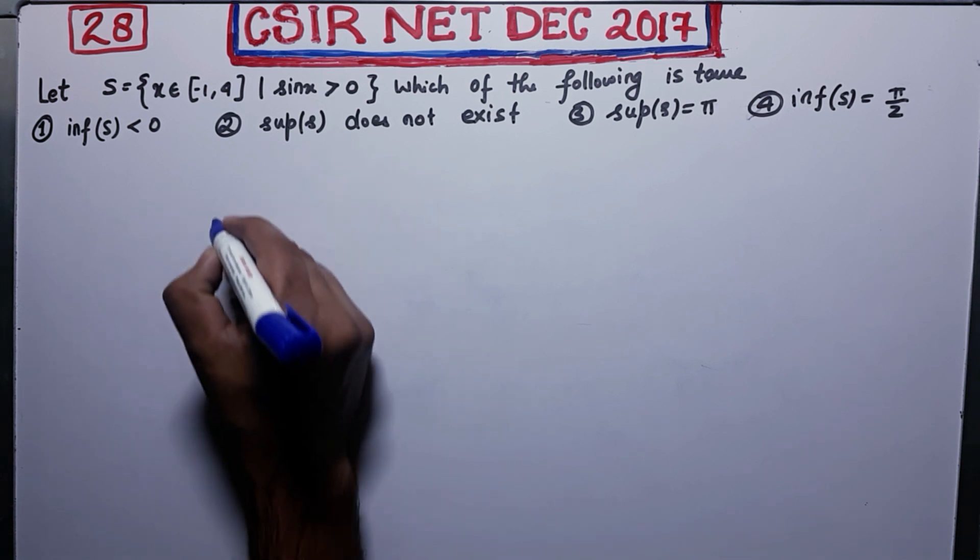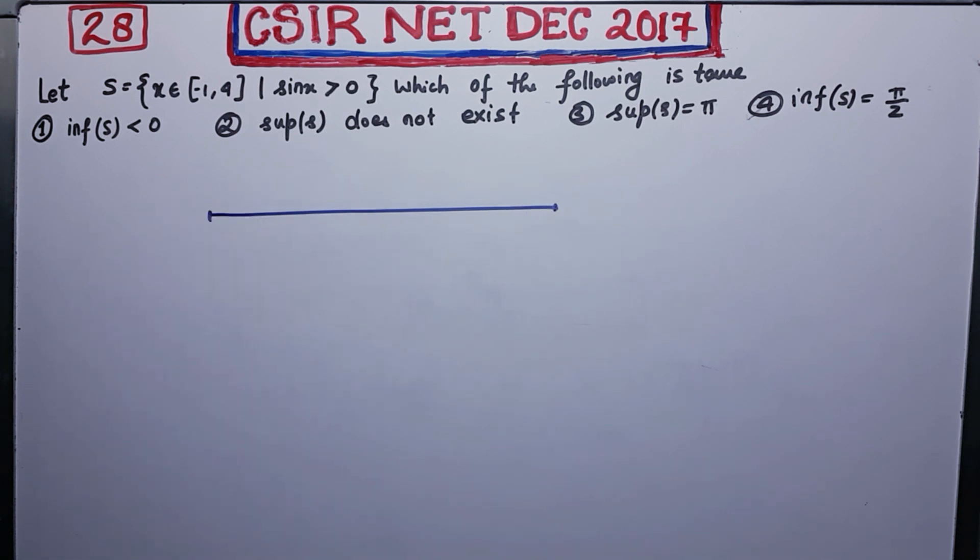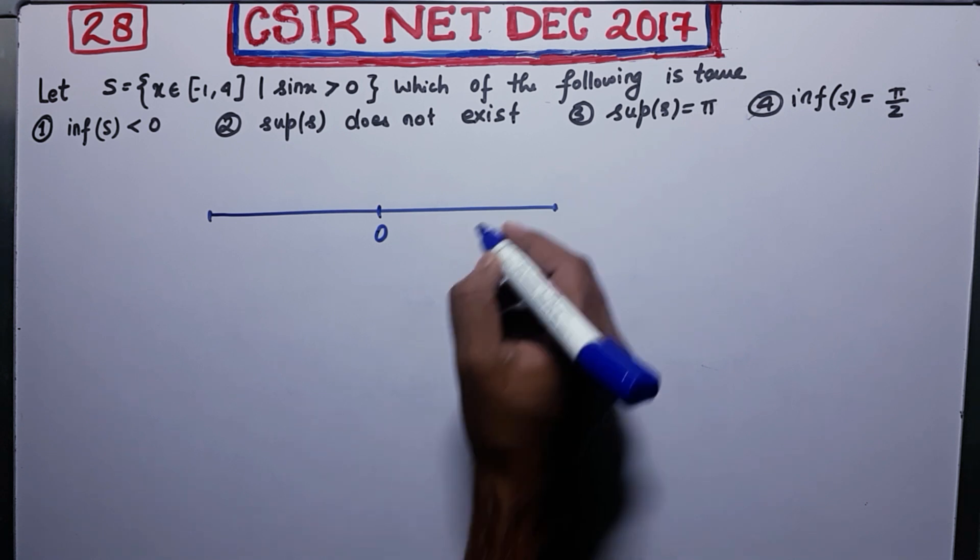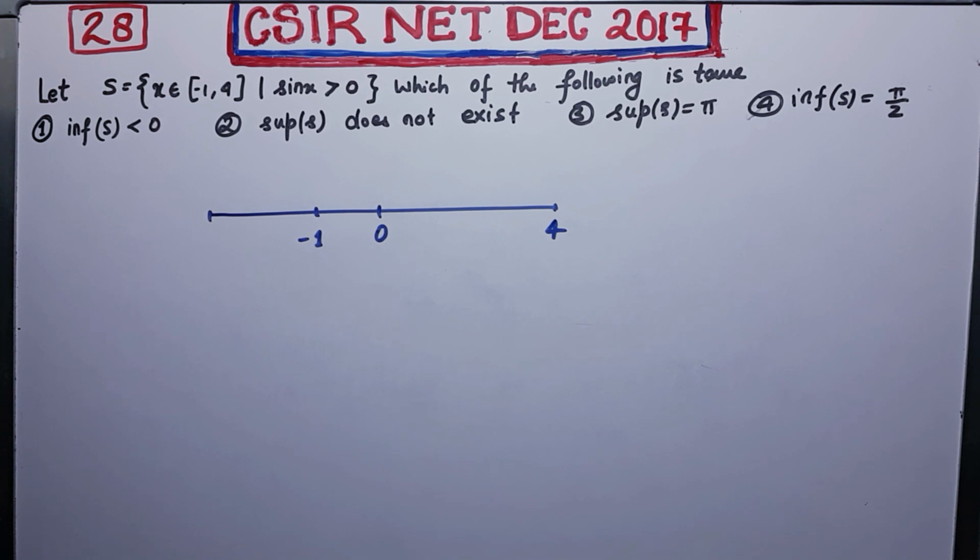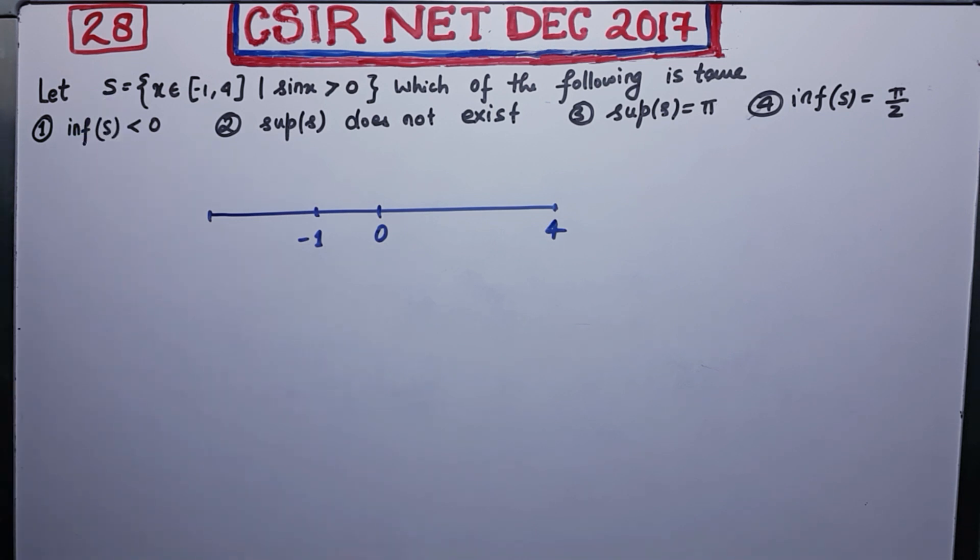So firstly what I will do, I will draw a number line here. Now let us suppose this is your 0, this is your π, this is your minus 1. Now you have to choose elements inside S from this interval.